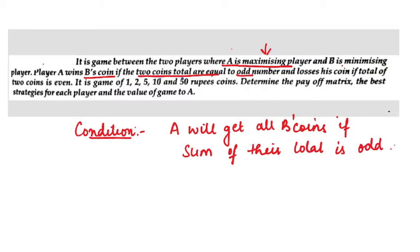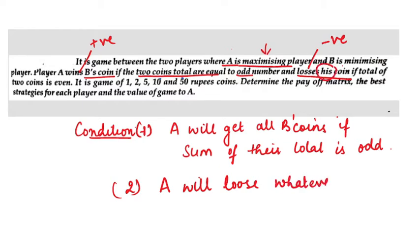Second, and loses his coin. Loses means A has to give the coins to B. Loses means minus, negative. Wins means positive. Now second condition is A will lose coins, A will lose his coin. Mark the words, his coin. Lose whatever A has if total, if sum of A's and B's means their total, if sum of their total is even.